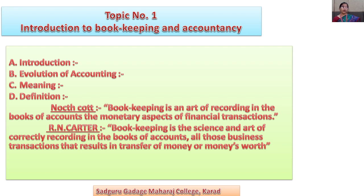Now we will see the evolution of accounting. In India, Kautilya wrote a book named Arthashastra. Afterwards, it was called Deshi Nama, wherein some references can be traced regarding the way of maintaining accounting records.